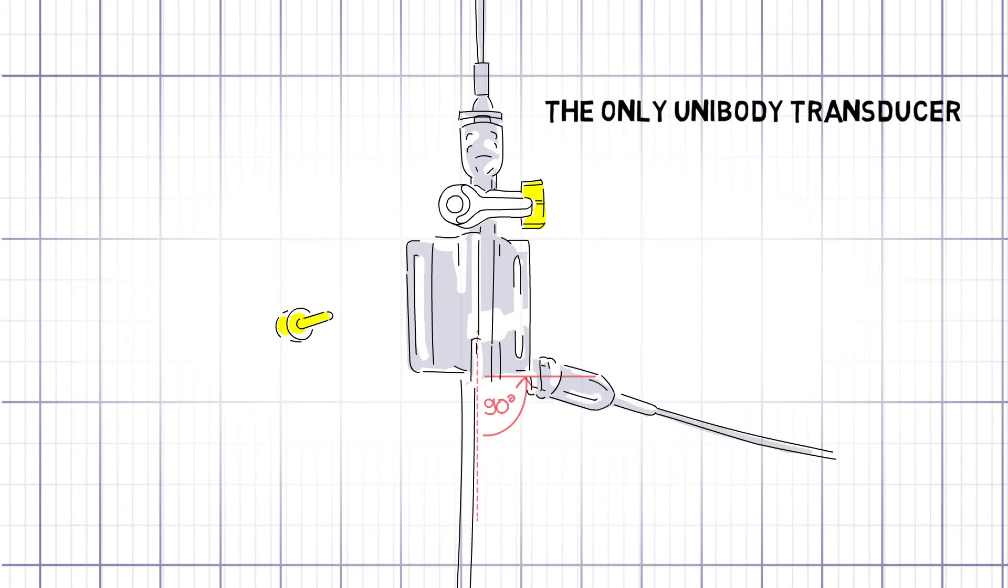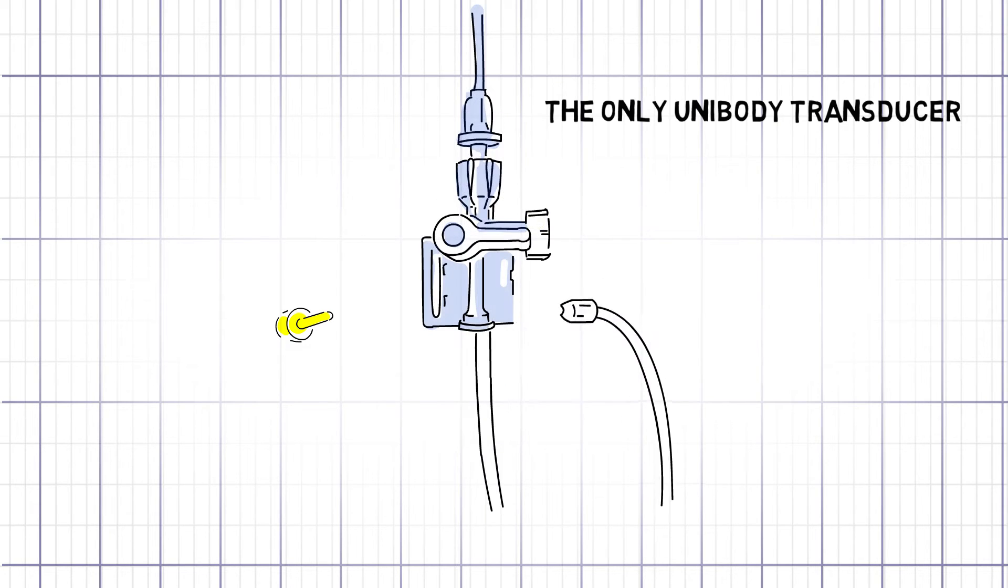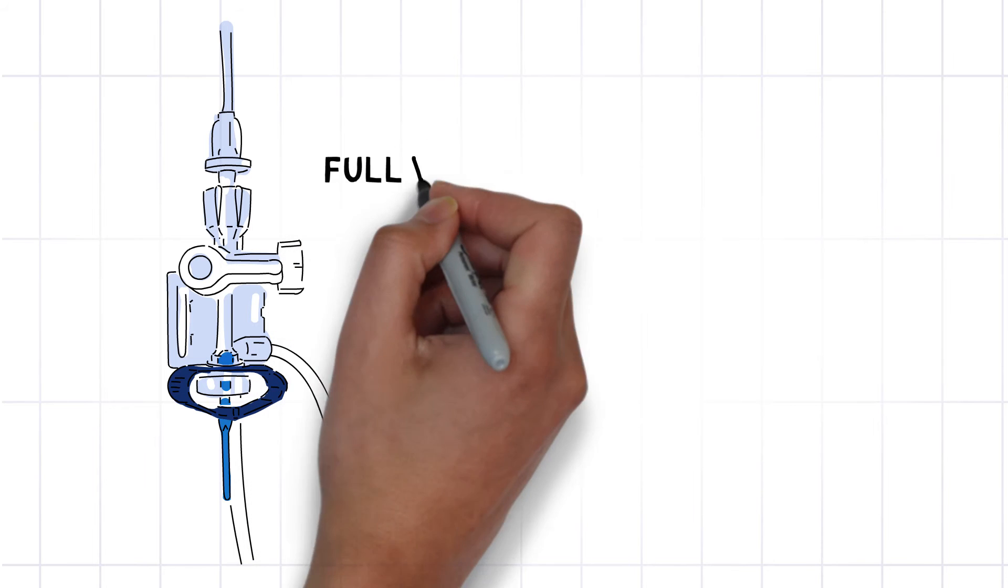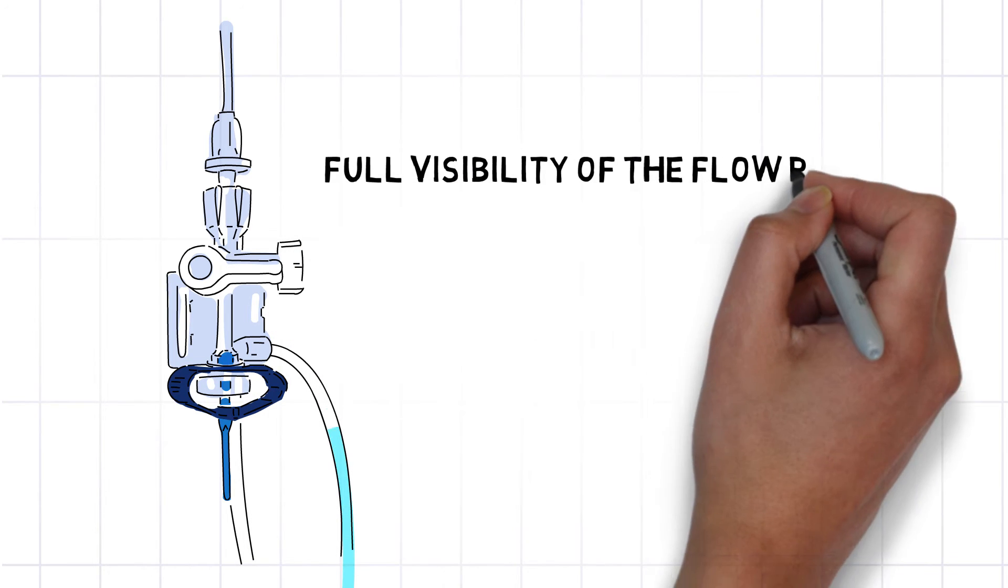Senseit, a unibody transducer with a built-in flush device located on the edge of the device. A unique shape allowing full visibility for identifying any hidden air bubbles.